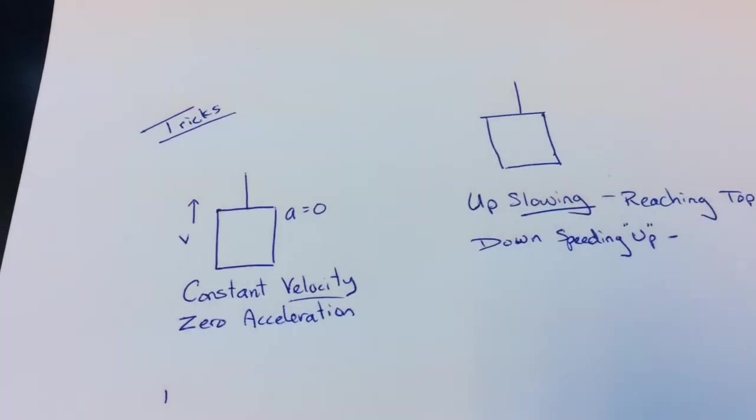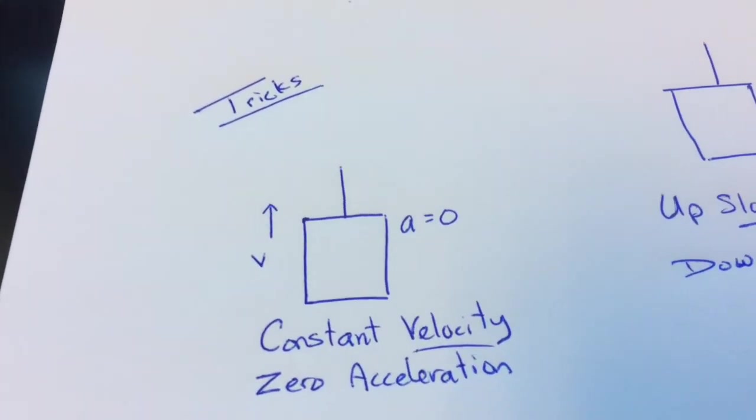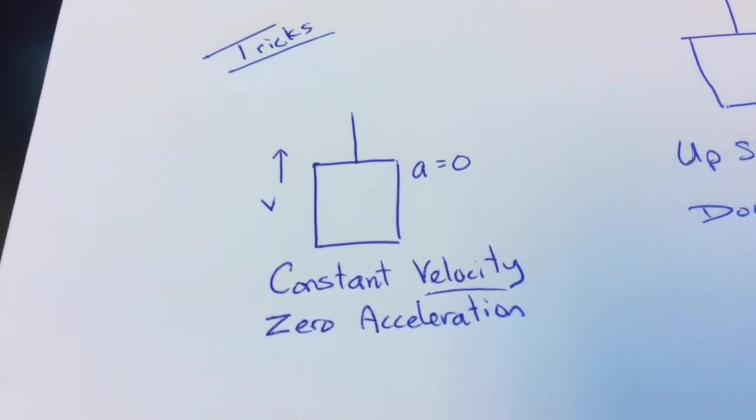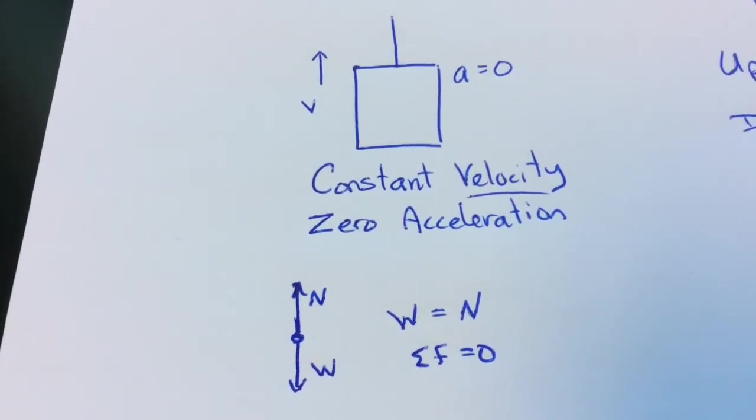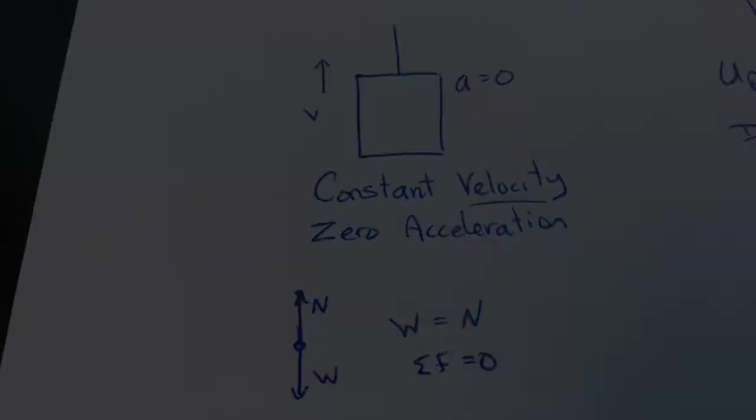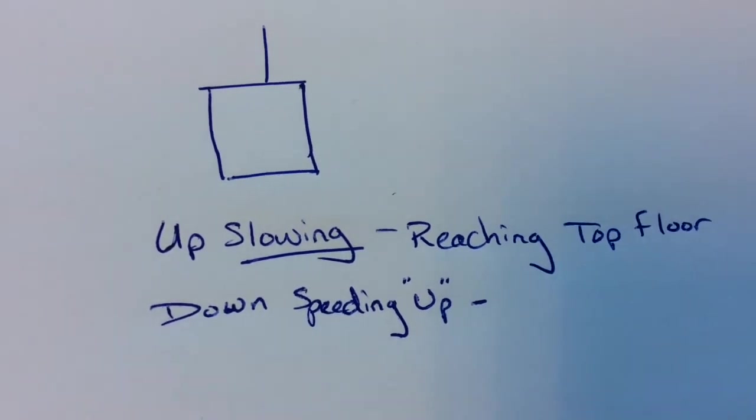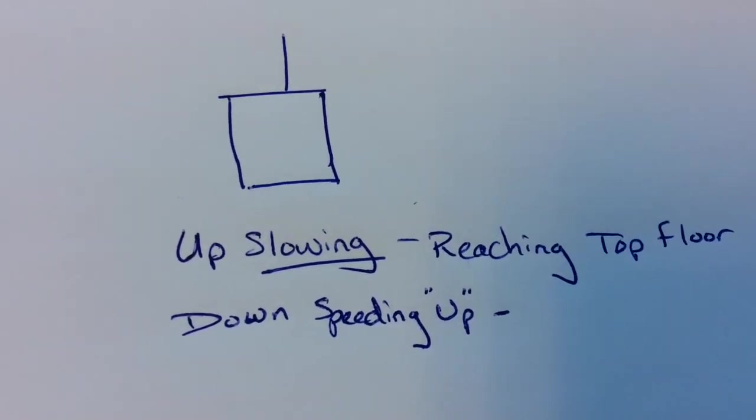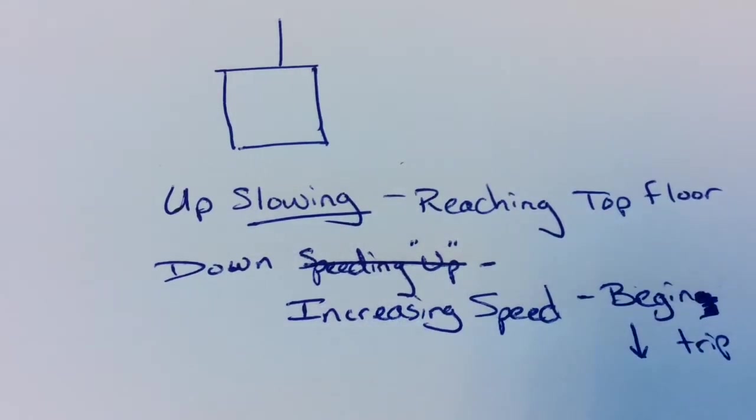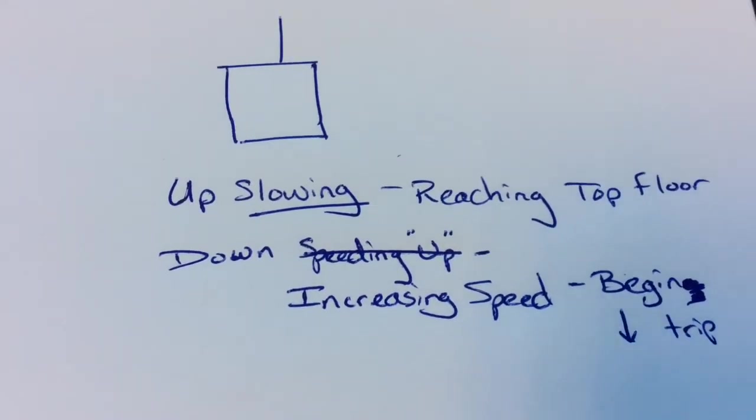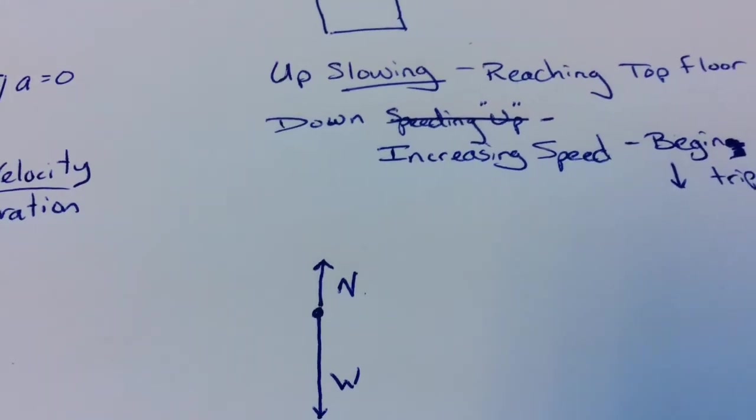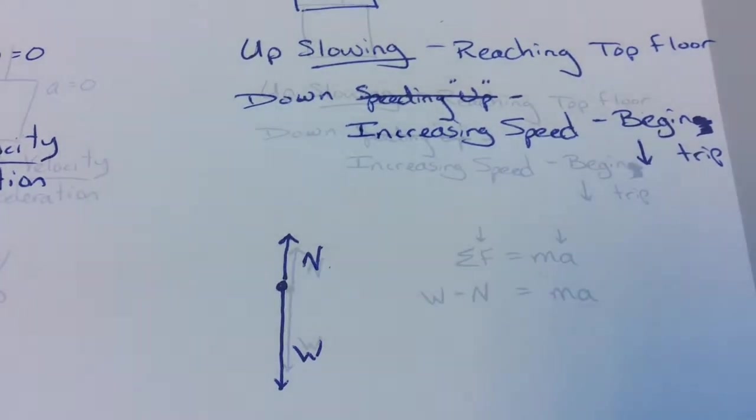Tips and tricks and things to remember. If you're moving up or down at a constant velocity and the acceleration is zero, it's the same as if you were at rest. The normal force and the weight balance. But if you're moving up and slowing down while reaching the top's floor or moving down and speeding up, acceleration is down.